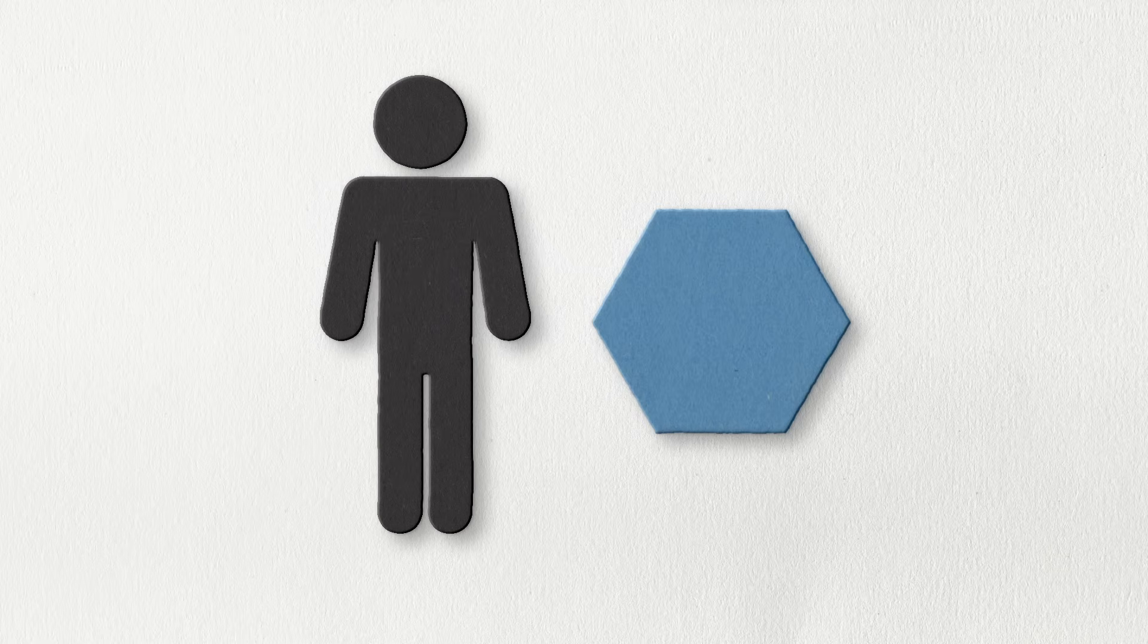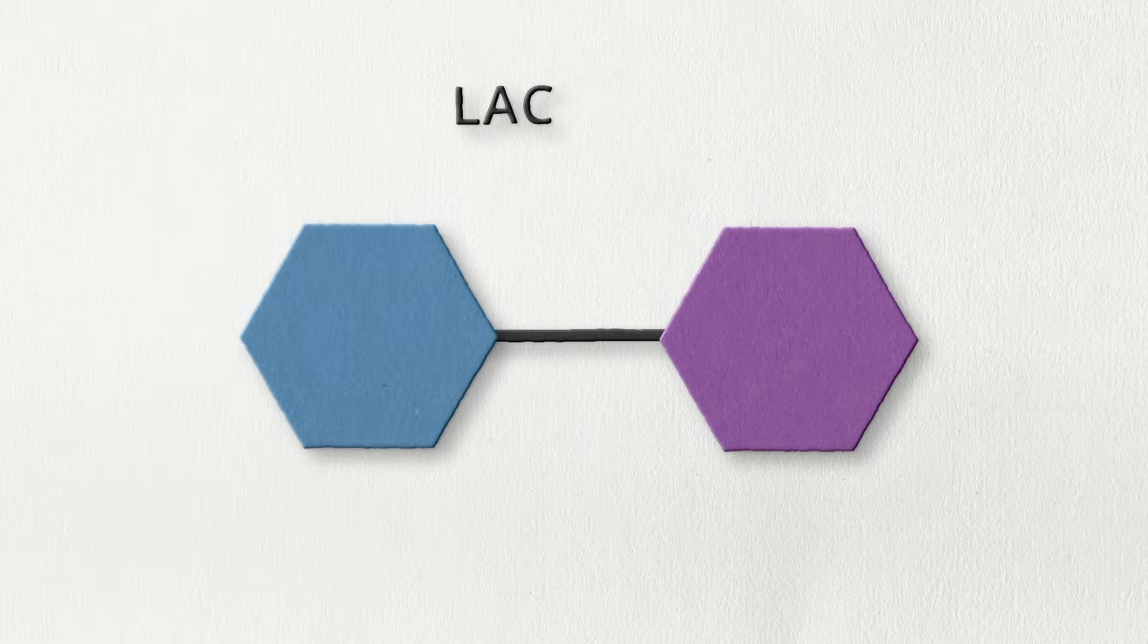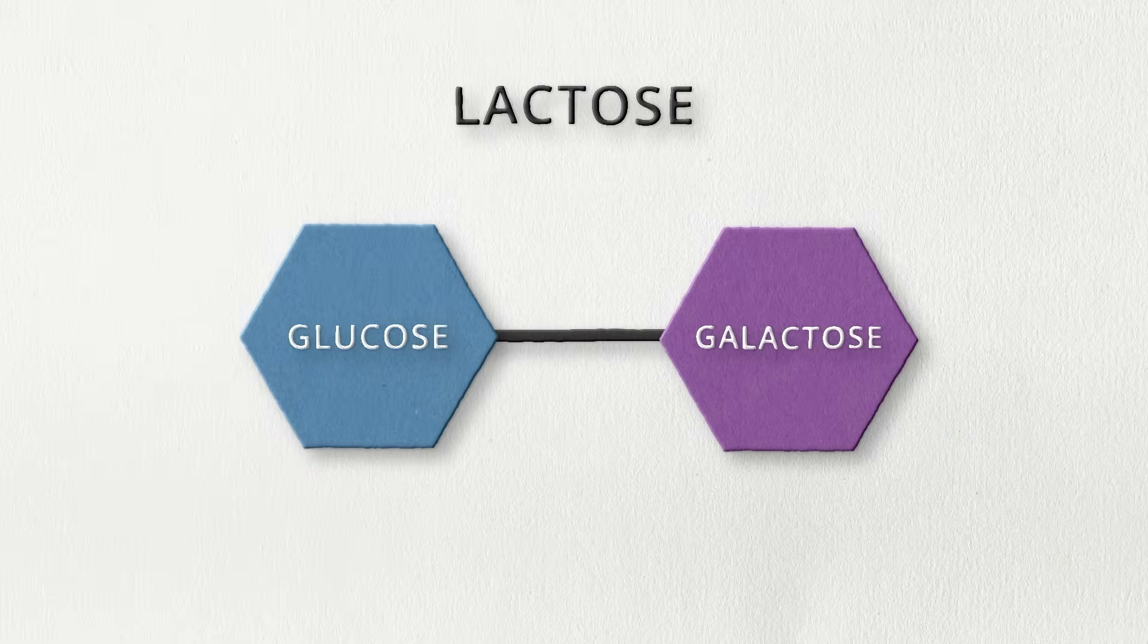Animals use dehydration synthesis to convert excess glucose, or small molecules, into glycogen, a longer molecule, for energy storage. For example, lactose is formed by combining glucose and galactose. Energy is released in this reaction due to the breaking down of chemical bonds.